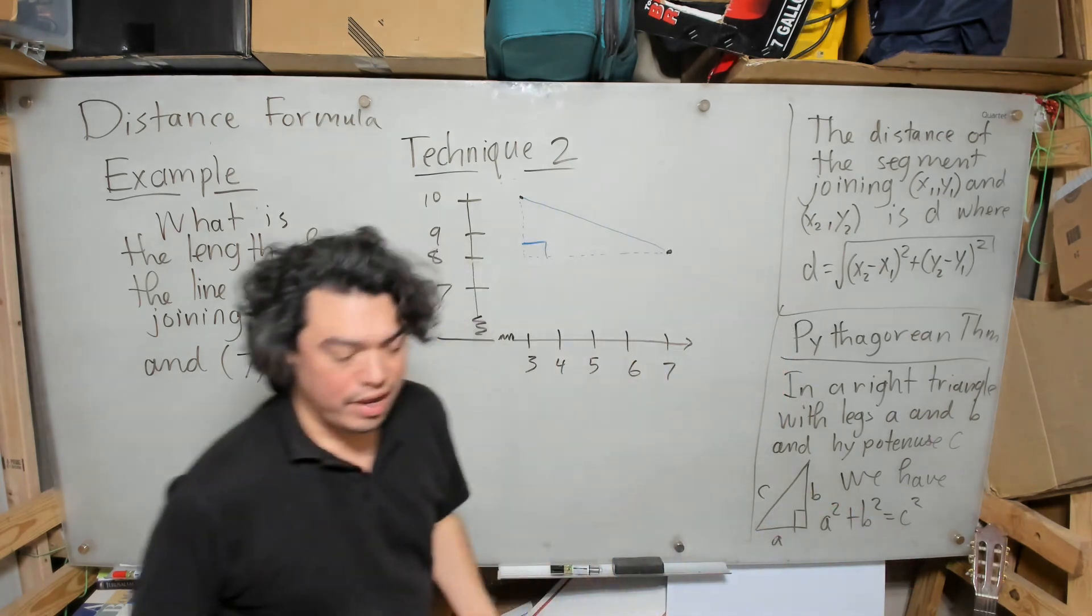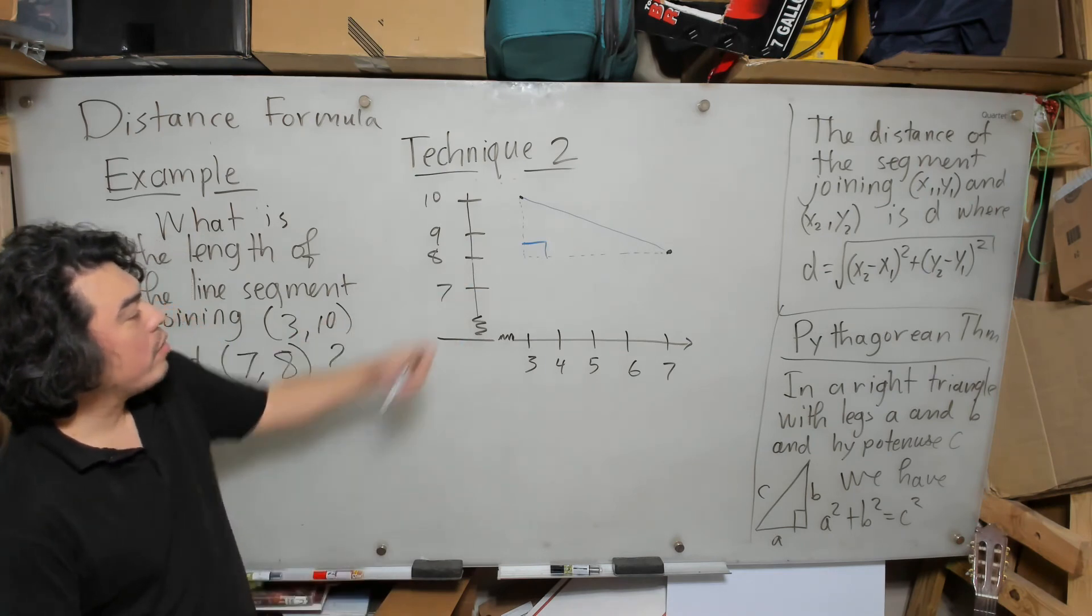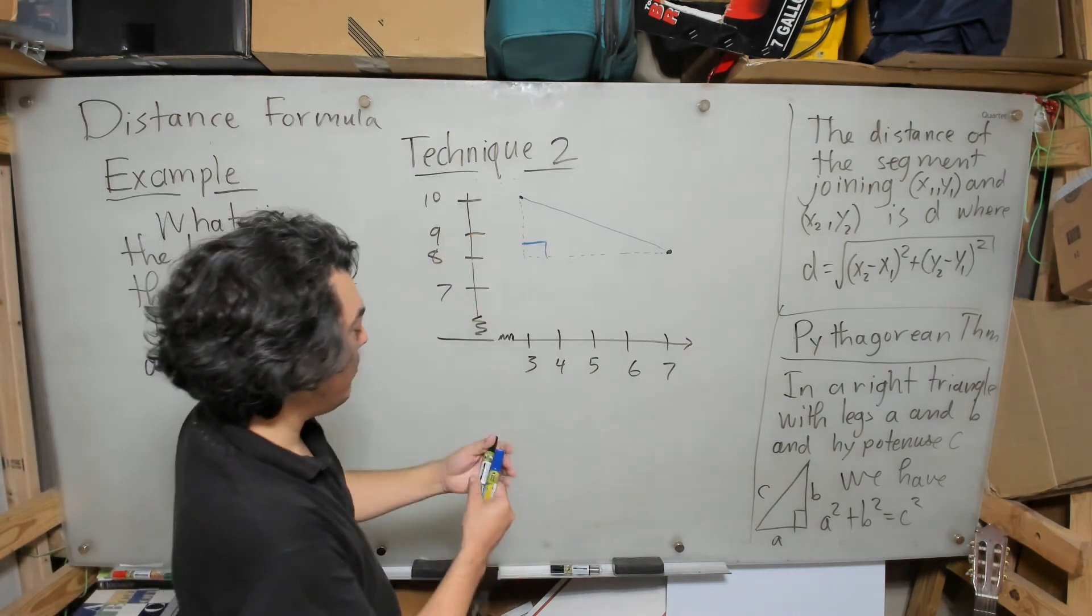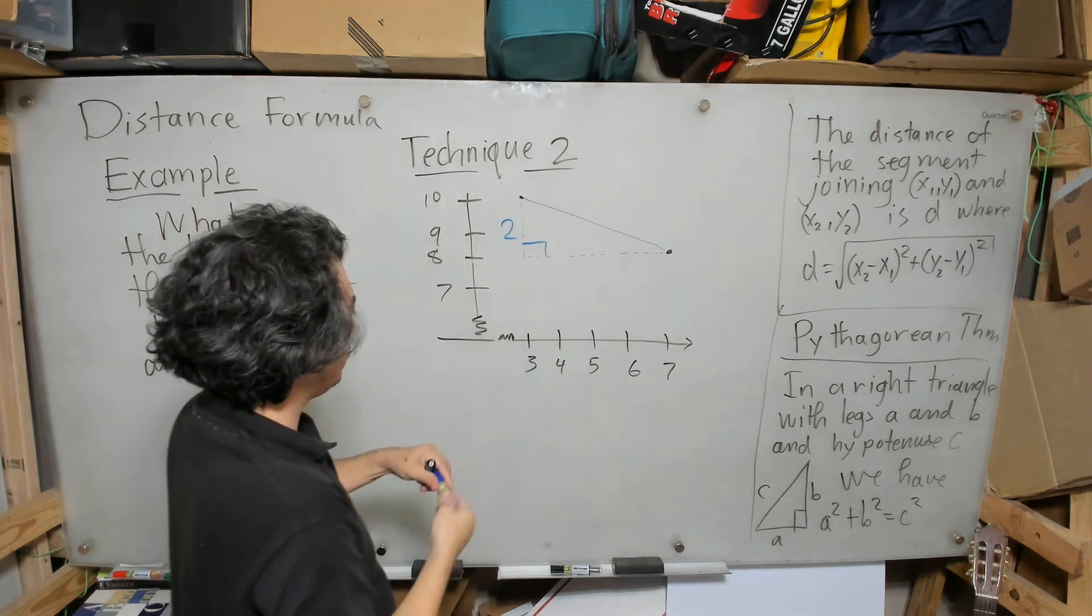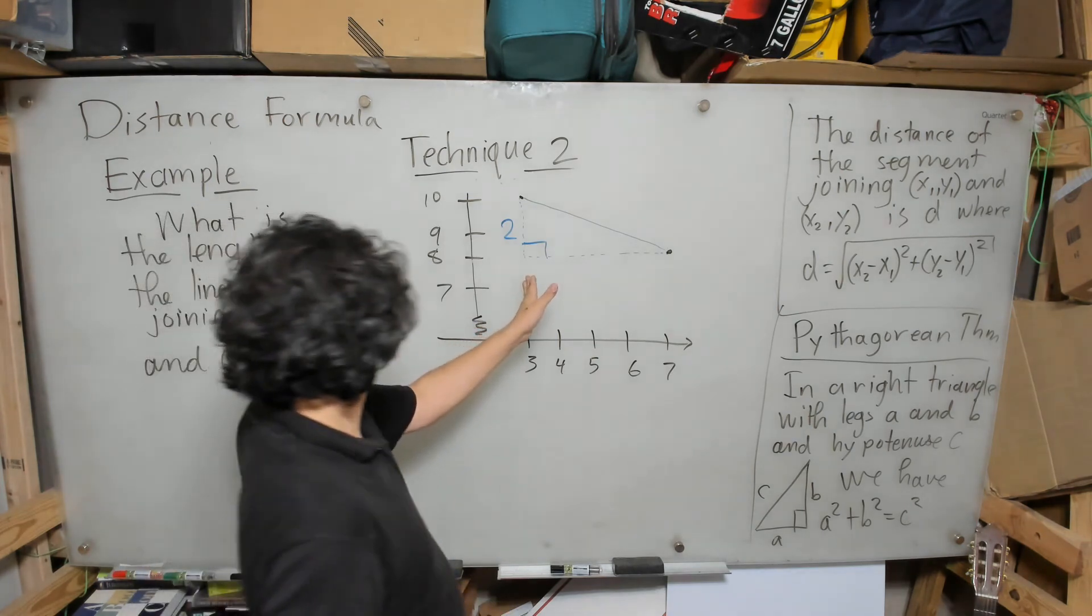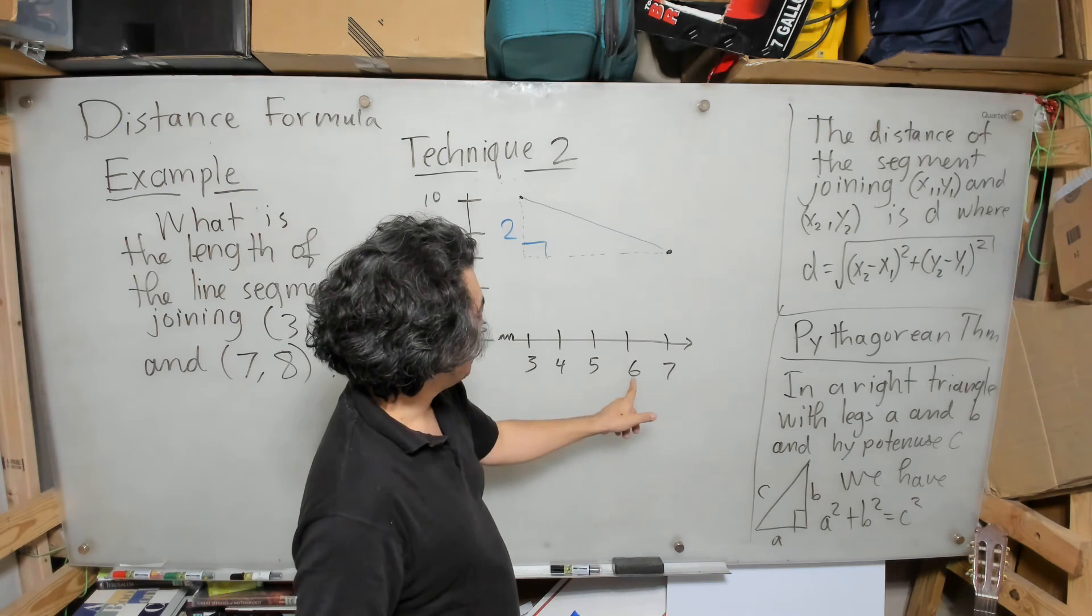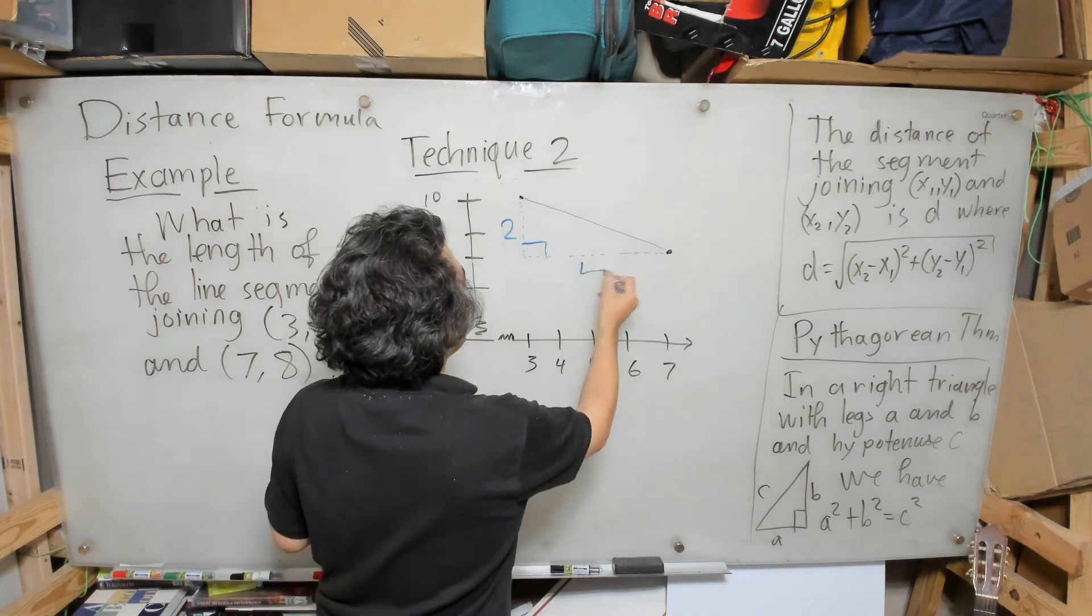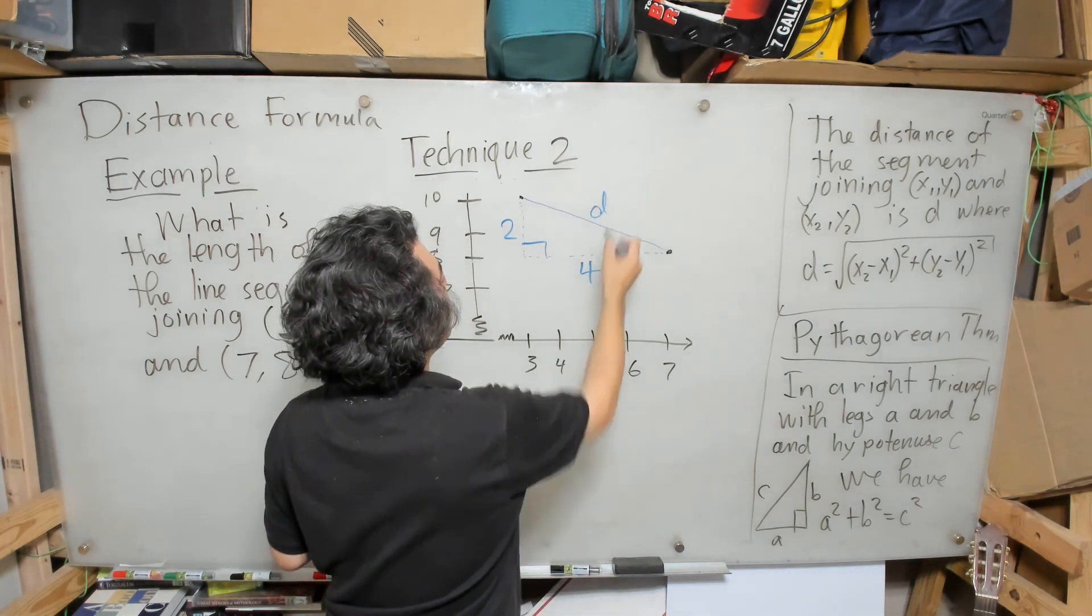Now here in our diagram, we know that here we go from 8 to 10, that means that this side has length 2. This side we go from 3 all the way to 7, so I have to go 1, 2, 3, 4, so I went 4 across. And then I want to find out what my d is.